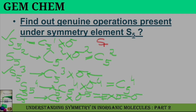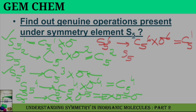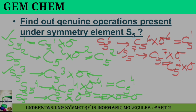For S5⁶, we have C5⁶ times sigma⁶. Sigma to an even power equals E, and C5⁶ is equivalent to C5¹, so this is not a genuine operation. For S5⁷, we have C5⁷ times sigma⁷. Sigma⁷ means one sigma, so we get a new operation written as C5² times sigma. Therefore S5⁷ is a genuine operation.